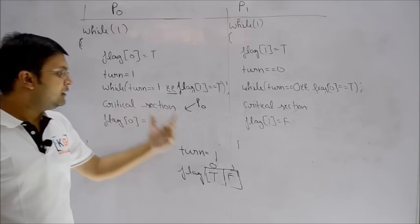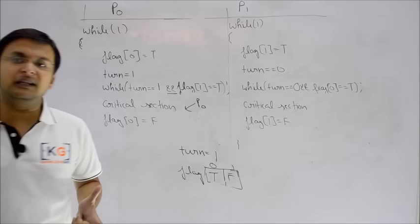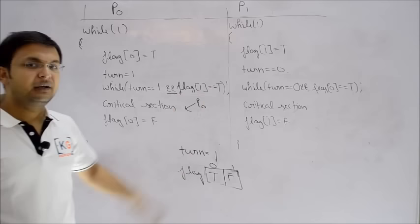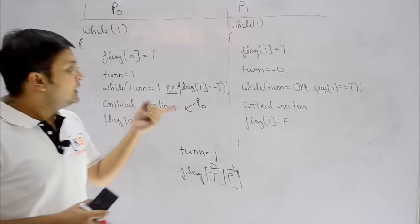Process P0 easily entered the critical section. The reason is: turn being 1 didn't matter because P1 was not interested. So the turn variable has no effect here — all dependency is on the flag. If process P1 is not interested, process P0 goes straight into the critical section.